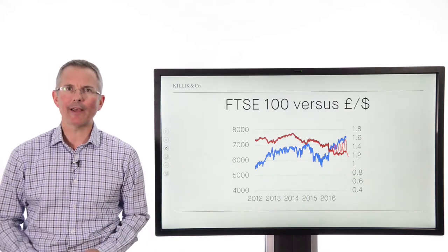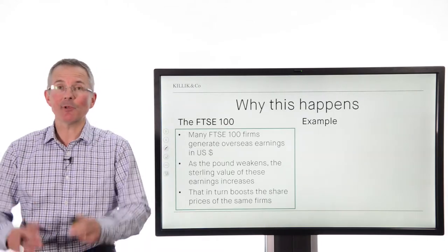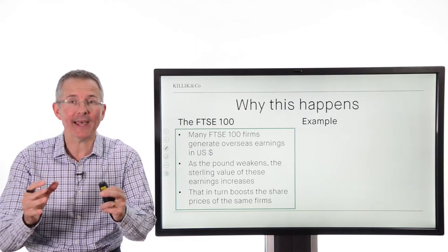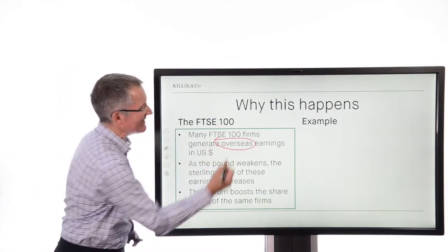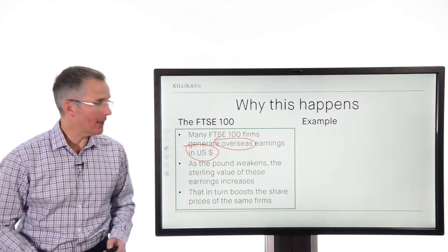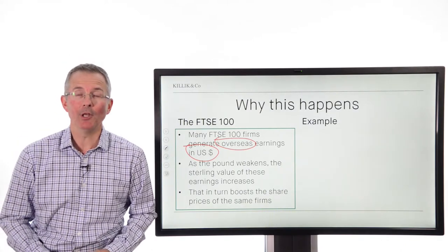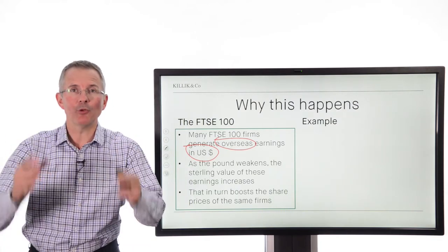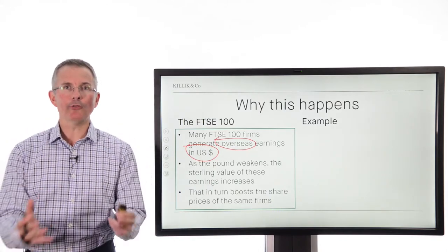So what's going on, and what are the investor takeaways? The explanation: it's because the FTSE 100, although it's quoted as a UK index, generates a huge proportion of its profits — the companies in that index generate a huge proportion of their profits from overseas. In particular, they generate earnings in US dollars. So as the pound weakens, the sterling value of those earnings is boosted, giving a boost to share prices of companies in the index. Cumulatively, that gives a boost to the index because it's built around market capitalisation — share prices rise, so does the index.